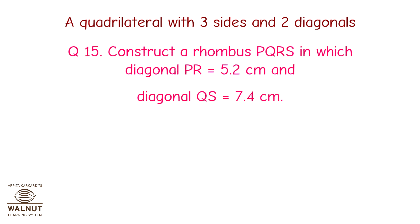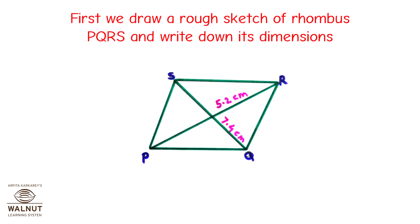Construct a rhombus PQRS in which diagonal PR is equal to 5.2 cm and diagonal QS is equal to 7.4 cm. First, we draw a rough sketch of rhombus PQRS and write down its dimensions.